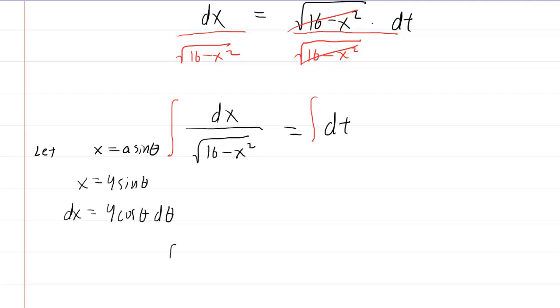And then we'll make the substitution. We'll rewrite the integral. In the numerator, we have the dx, which is this quantity right here. And then in the denominator, we have the square root of 16 minus... Now, remember, our x was 4 sine of theta. So you're going to rewrite that as 4 sine of theta, and then don't forget to square it.